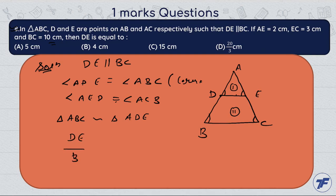DE upon BC equals AE upon AC. Now to find DE, we have BC is 10 centimeters, AE is 2, and AC is 2 plus 3, which is 5.